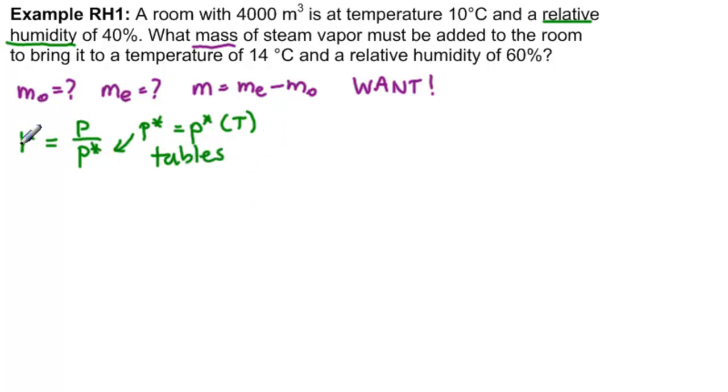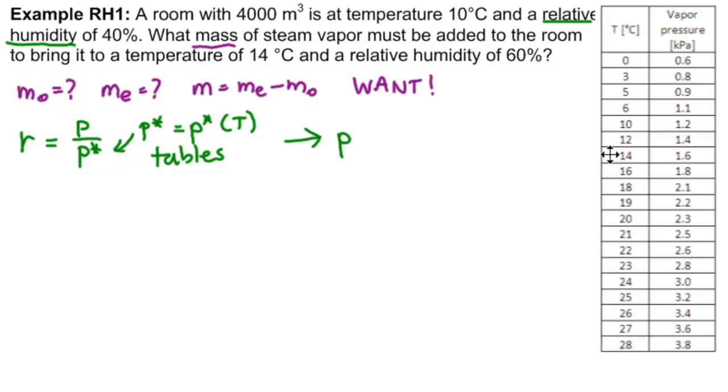We have the relative humidity if we have a value for this. So from here we can get our pressure. So let's go find a table. So here is a table. We see it's on degrees Celsius and kilopascals, so we have to remember that.